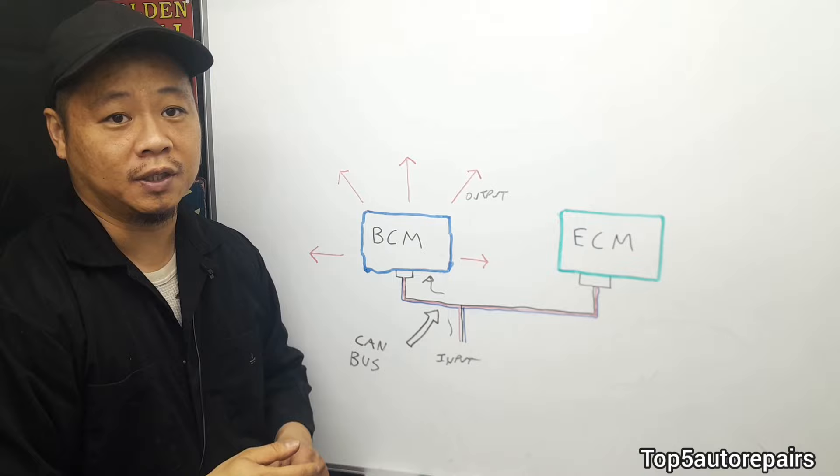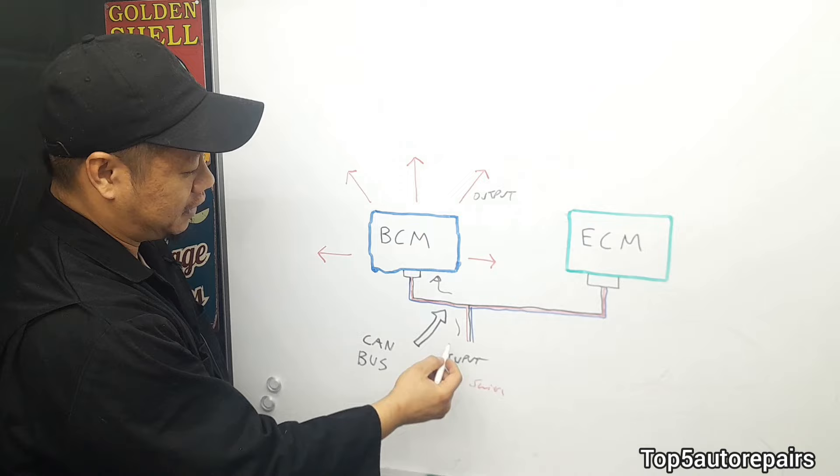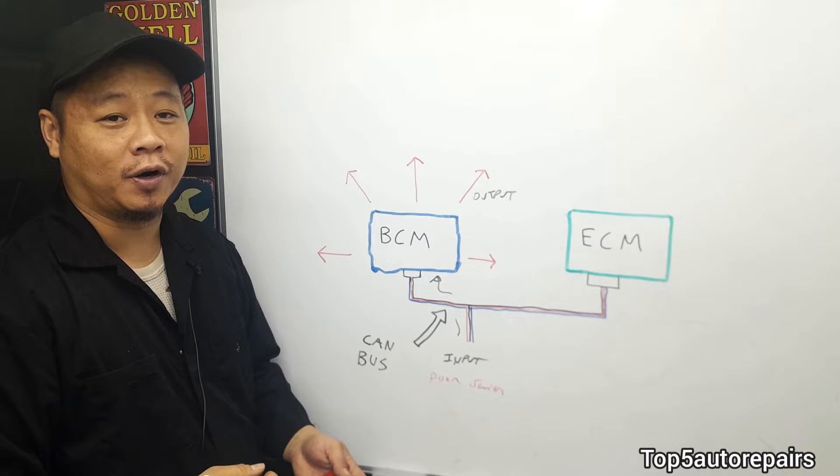For example, let's say an input is going to be a door switch. So when you press the door switch, it's going to send information through the CAN bus straight to the BCM. And the BCM is going to tell the door actuator to either lock or unlock the door.